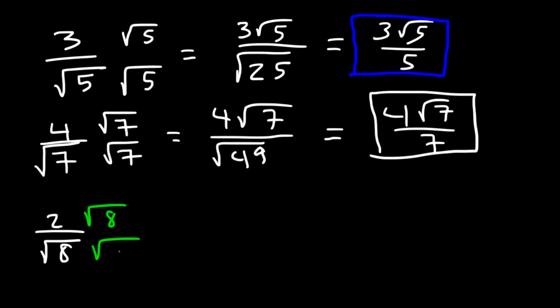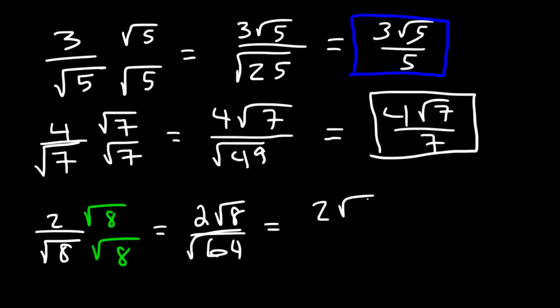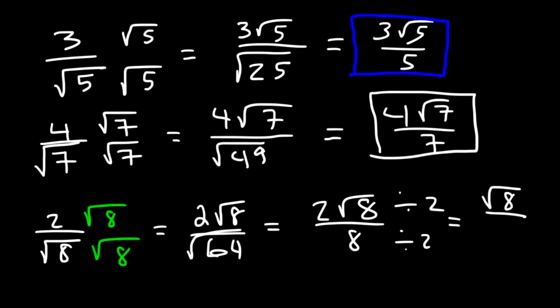For the second example, let's multiply the top and the bottom by the square root of 8. 8 times 8 is 64, and the square root of 64 is 8. Notice that we can reduce the fraction — we have a 2 and an 8, and both numbers are divisible by 2. So the final answer is the square root of 8 divided by 4.